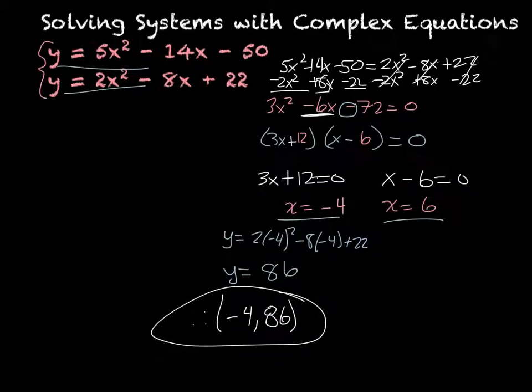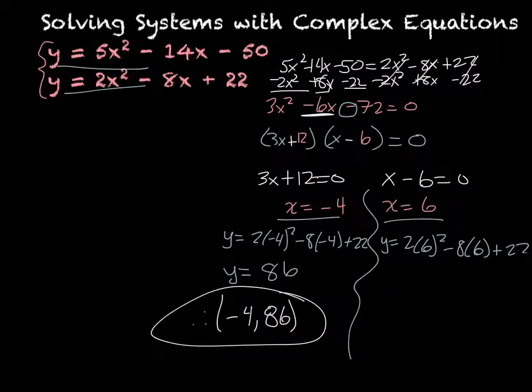But that's not our only one because we had another x in our answer. So I'm going to pick x is 6 and y equals 2 times 6 squared minus 8 times 6 plus 22.